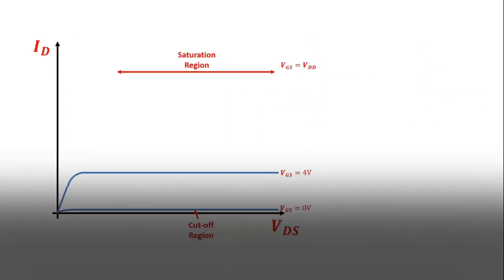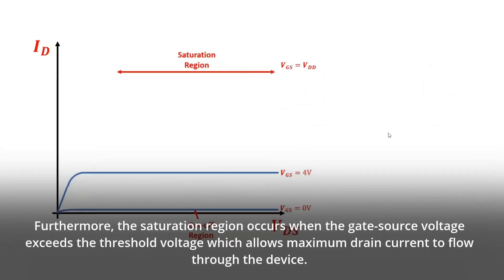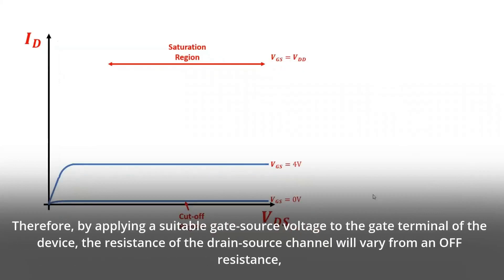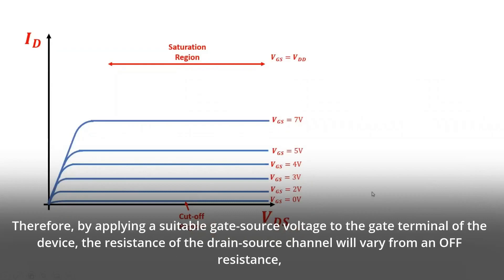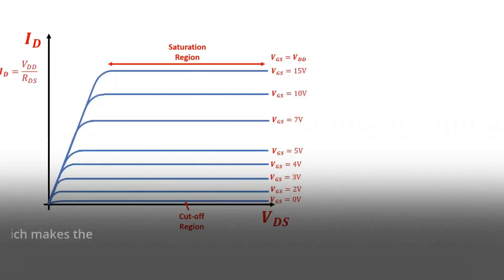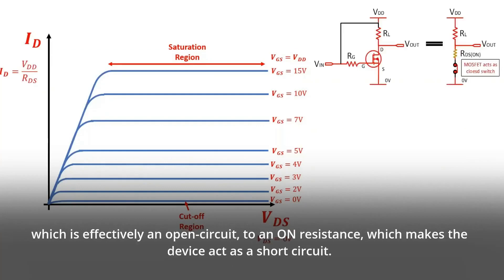Furthermore, the saturation region occurs when the gate source voltage exceeds the threshold voltage which allows maximum drain current to flow through the device. Therefore, by applying a suitable gate source voltage to the gate terminal of the device, the resistance of the drain source channel will vary from an off resistance, which is effectively an open circuit, to an on resistance, which makes the device act as a short circuit.